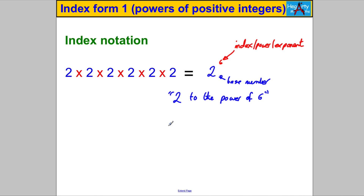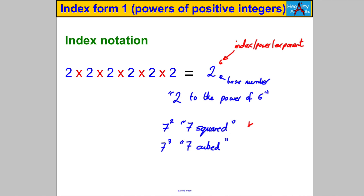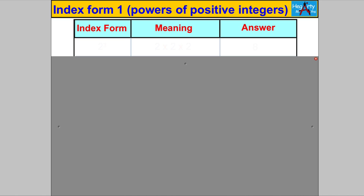Just a little more vocabulary. When you see 7 to the power of 2, mathematicians say that as '7 squared' — that's a special one. And if you had 7 to the power of 3, they usually say that as '7 cubed'. But anything with a 4, 5, 6, or 7 as powers, they say '7 to the power of 4', '7 to the power of 5', etc. It's worth noting those because you will hear them from your teachers and see them in textbooks.